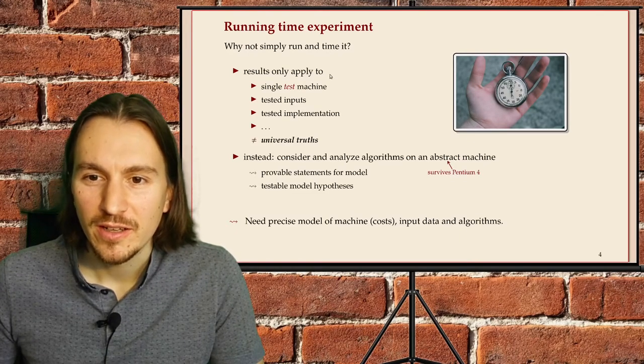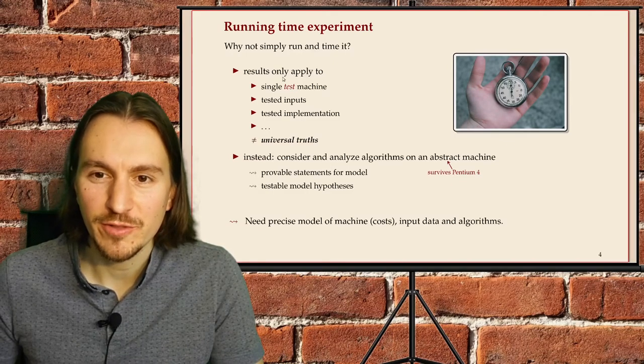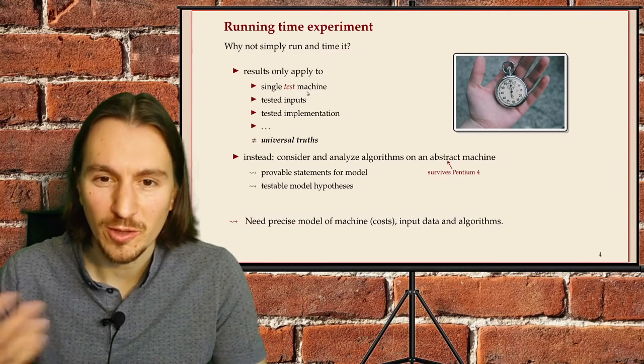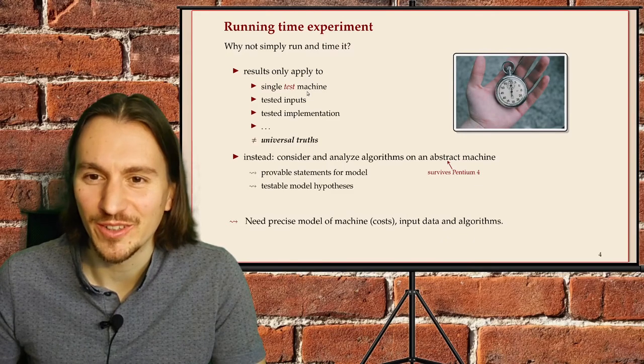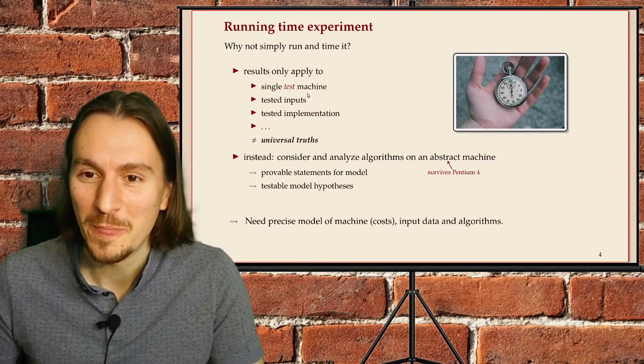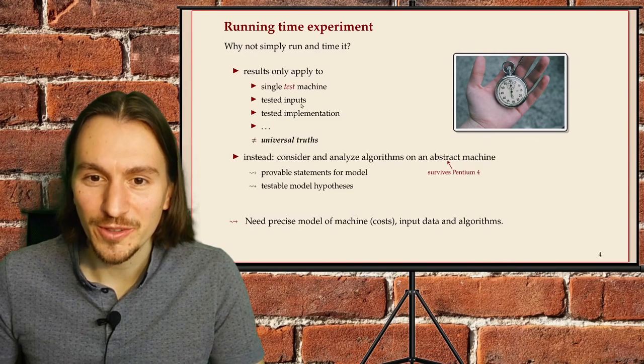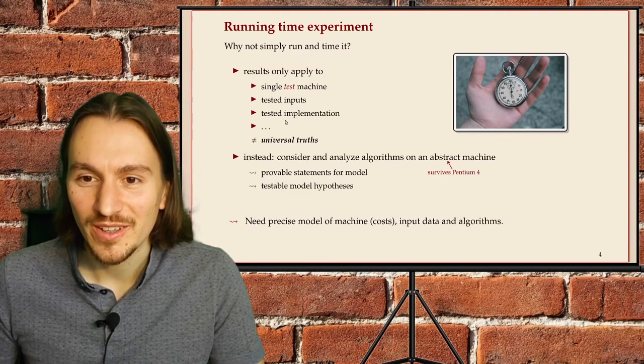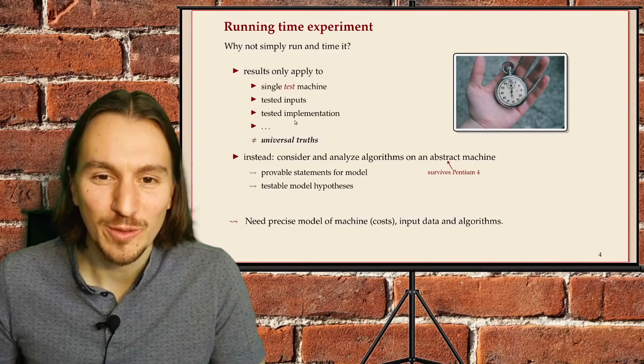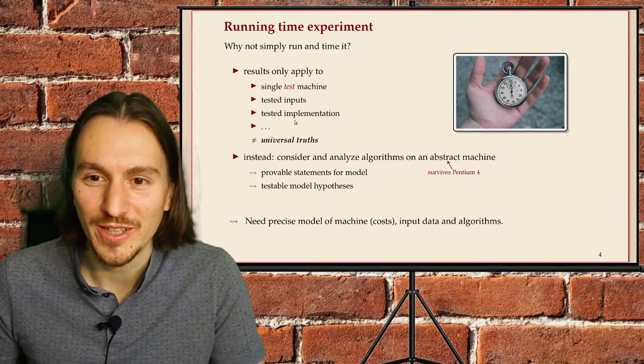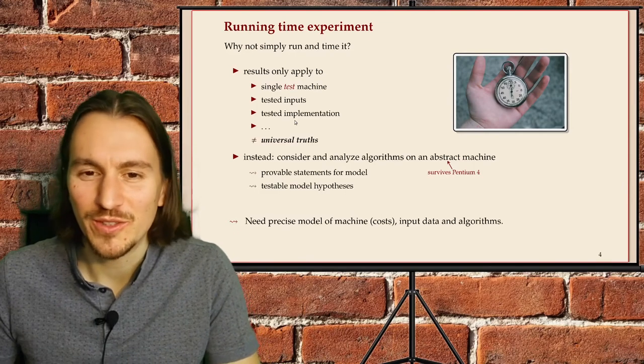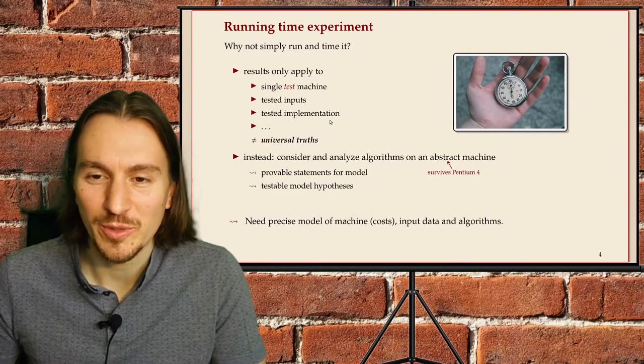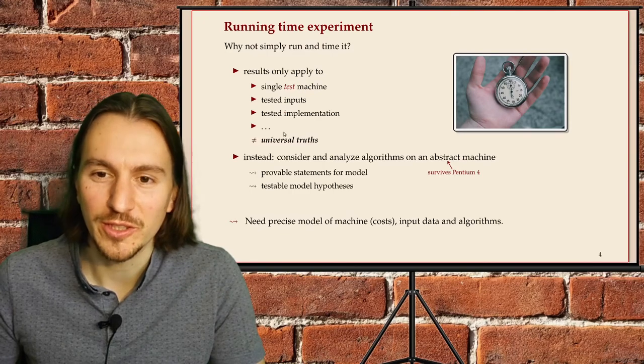A simple thing you can do is you just implement your algorithm and time it and run it and time it. That's fine and it's useful to do. But it has restrictions, it has limitations. What you get is a result for a single machine, you can compute it, you can compare it on many different machines, but then often the results are inconclusive or they're different depending on the machine. It's also restricted to the actual inputs that you used, which might sometimes give a very skewed picture. And again, it's restricted to a specific implementation, the one that you produced and tried out. And maybe you made a stupid mistake in implementing something unnecessarily inefficiently and someone else has a better idea. You wouldn't see this from doing experiments.